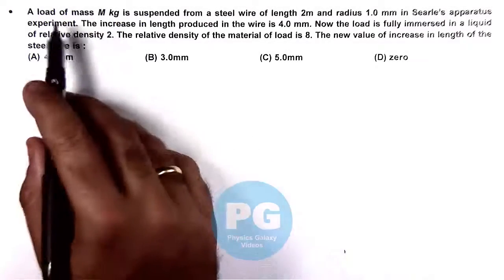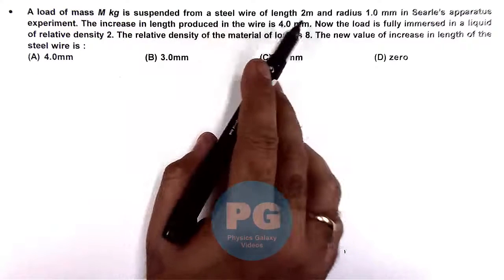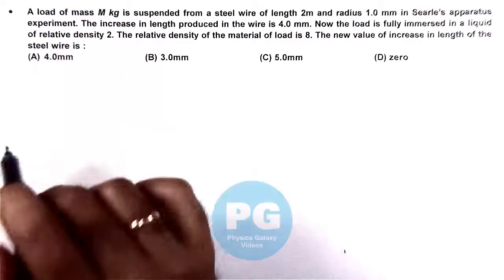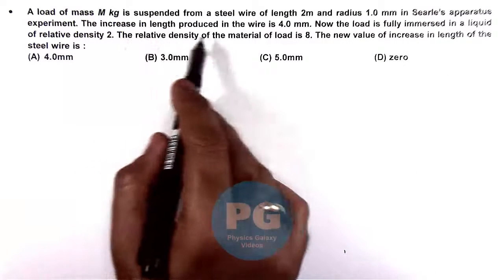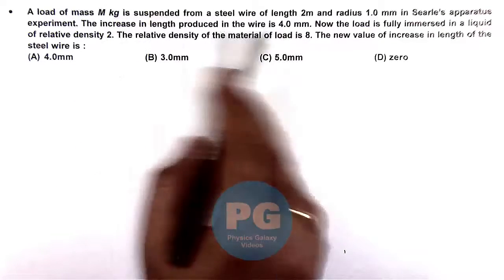In this question, a load of mass m kilogram is suspended from a steel wire of length 2 meters and radius 1 mm in Searle's apparatus experiment. The increase in length produced in the wire is 4 mm due to the elasticity in the wire and the weight suspended.